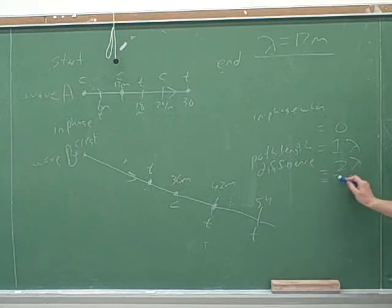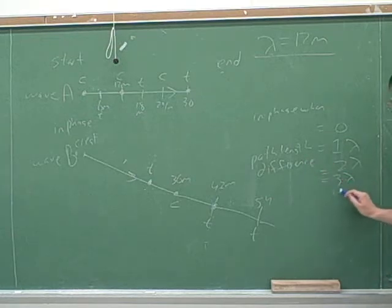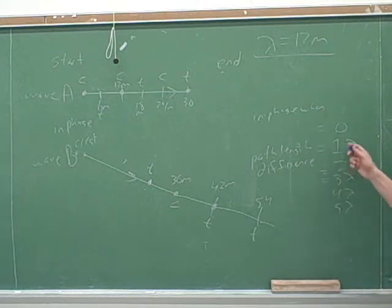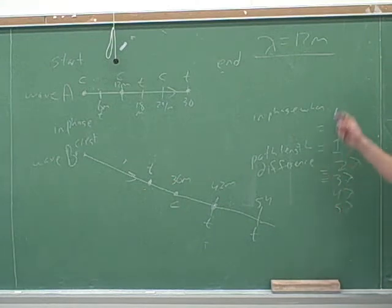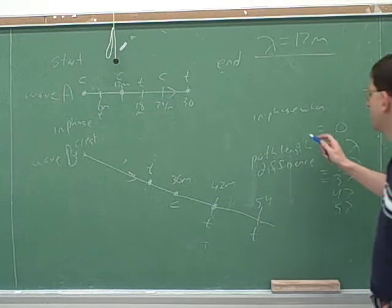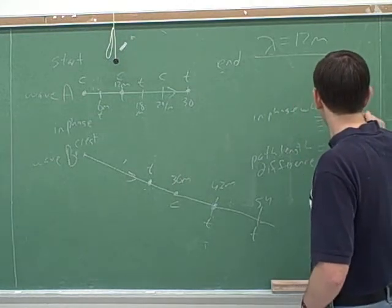When's the next time they're in phase when there's a path length difference of 3λ? Or 4λ? Or 5λ? You can go on forever like this. A mathematician would say that they're in phase when the path length difference is M times lambda, and M can be anything from 0 up to infinity. That's where M is coming from — it's talking about how many wavelengths difference there is in their paths. So they're in phase when the path length difference is M times lambda.